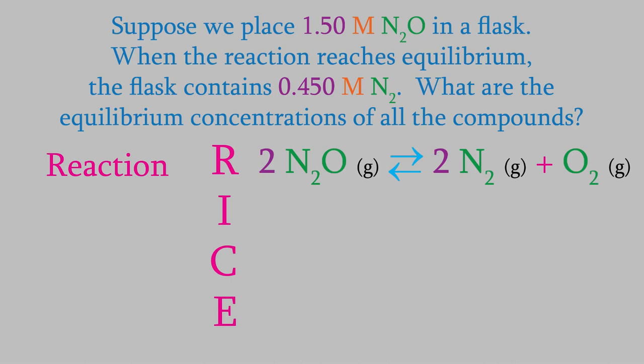The second column is I, which stands for the initial concentrations. In this case, we know the initial concentration of N2O is 1.50 molar. That was the only thing in the flask at the beginning, so the initial concentrations of nitrogen and oxygen were both zero.